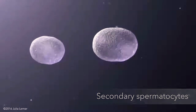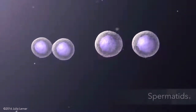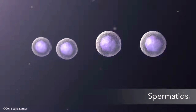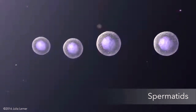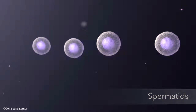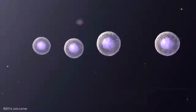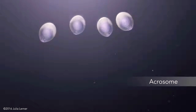The secondary spermatocytes divide once more, giving rise to four haploid cells called spermatids, containing exactly half of the father's genetic material. Through a process known as spermiogenesis, the spermatids change shape, transforming into mature sperm cells. The spermatid's nucleus condenses and the acrosome appears as the tail begins to grow.